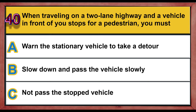Question 40. When traveling on a two-lane highway and a vehicle in front of you stops for a pedestrian, you must: A. Warn the stationary vehicle to take a detour. B. Slow down and pass the vehicle slowly. C. Not pass the stopped vehicle. Correct answer is C: Not pass the stopped vehicle.